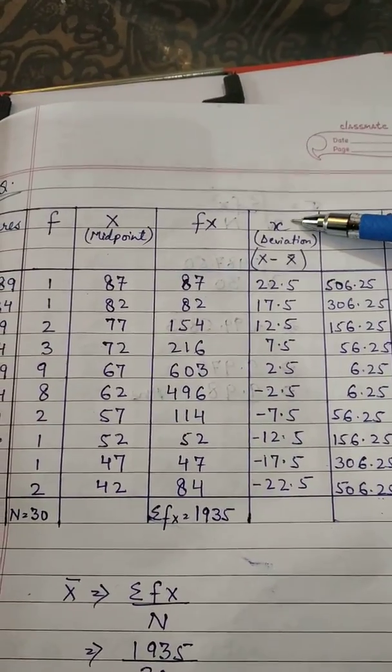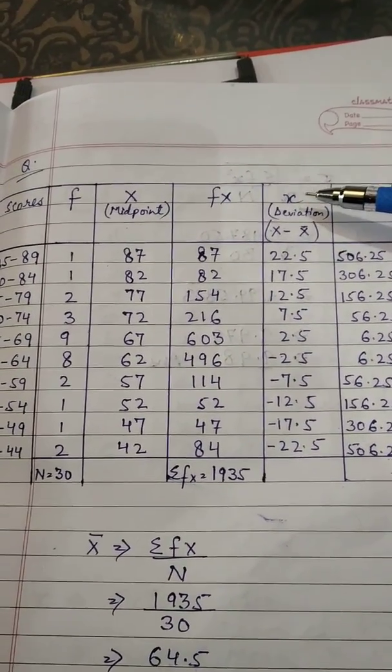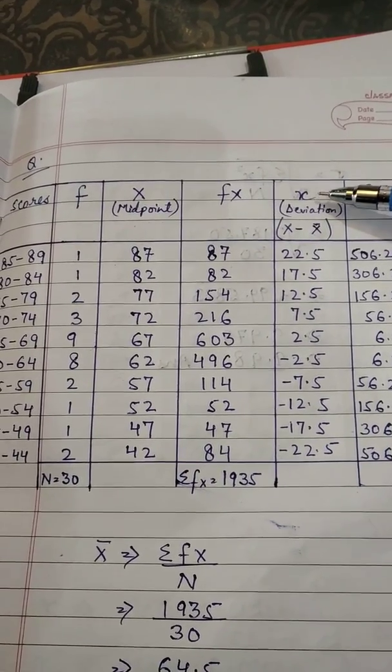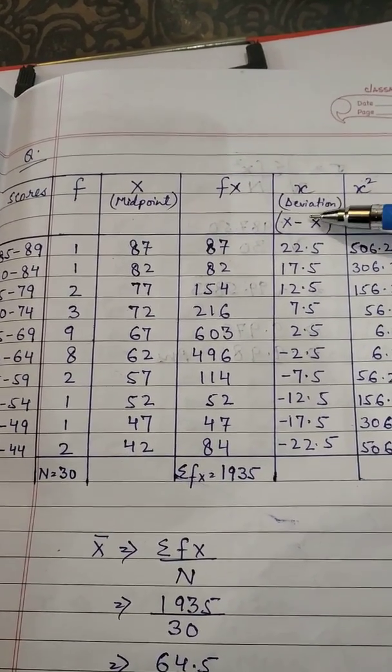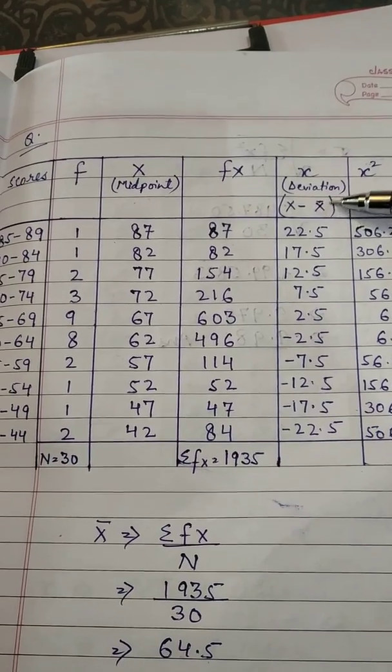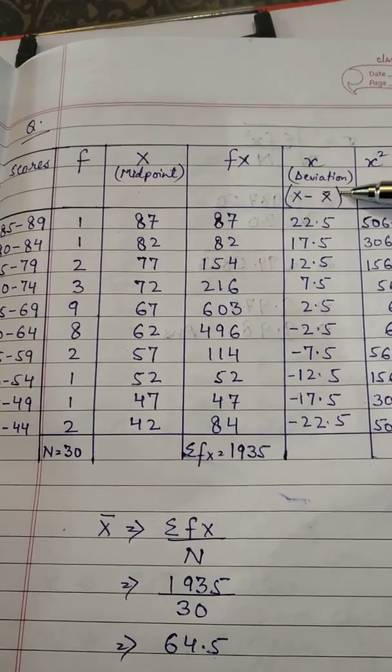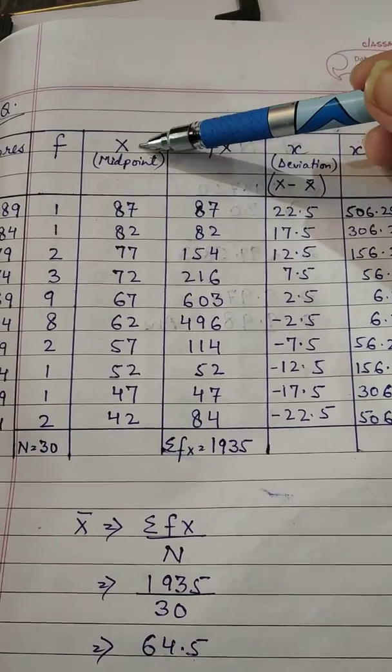Now you will calculate small x. Small x aapko calculate karna hota hai. This is deviation. Toh small x kao kaise calculate karenghe. Capital X minus mean ka. Yeh joh thha X bar. Toh x kya hai aapka? X aapka yeh hai 87.